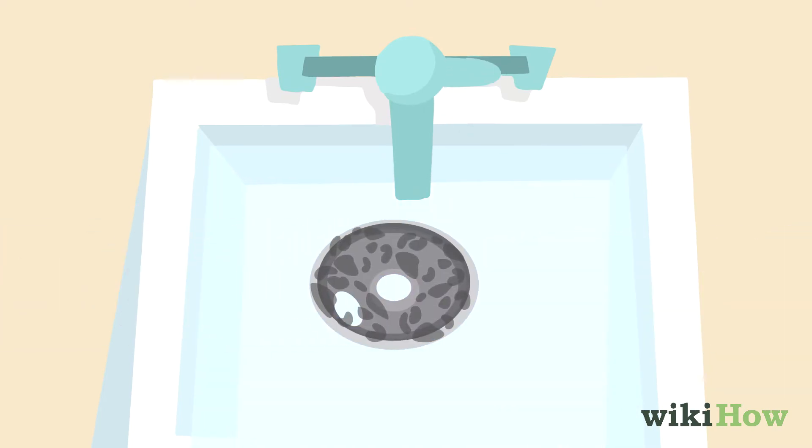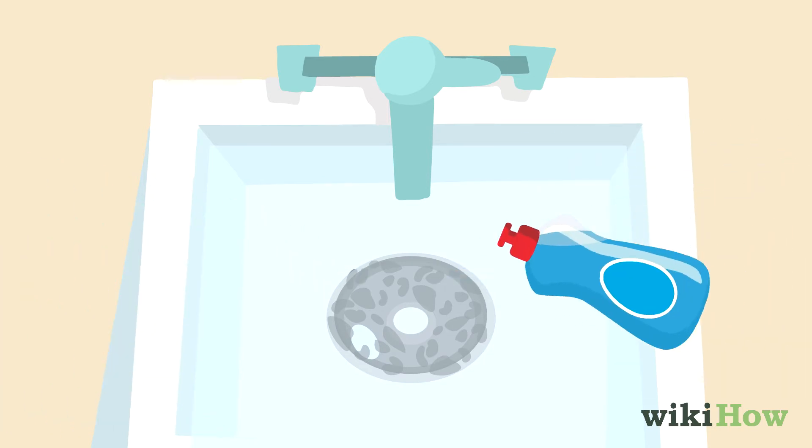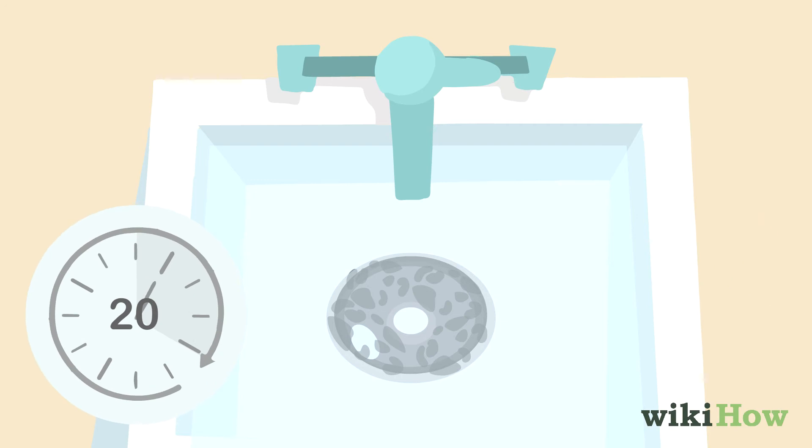For extra dirty drip plates, soak them in two parts baking soda, one part vinegar, and a few drops of dish soap for 20 minutes.